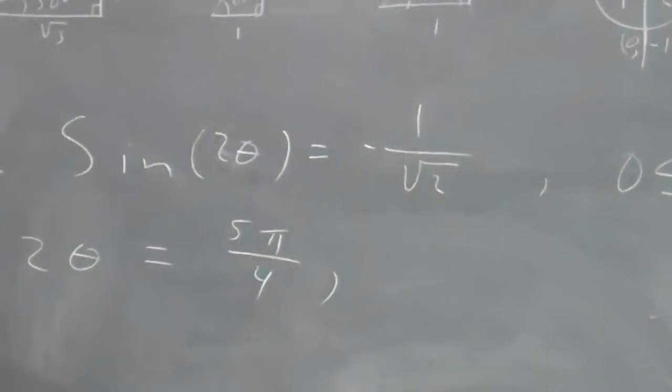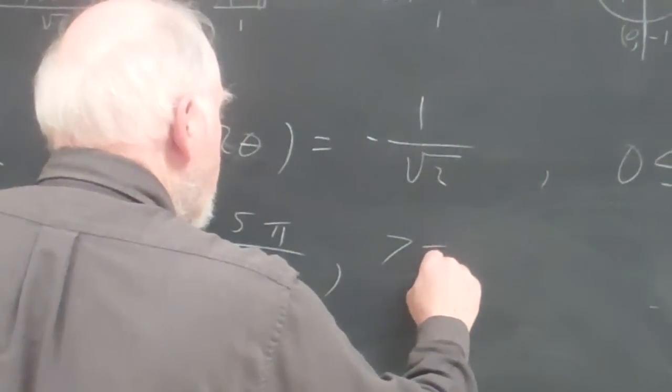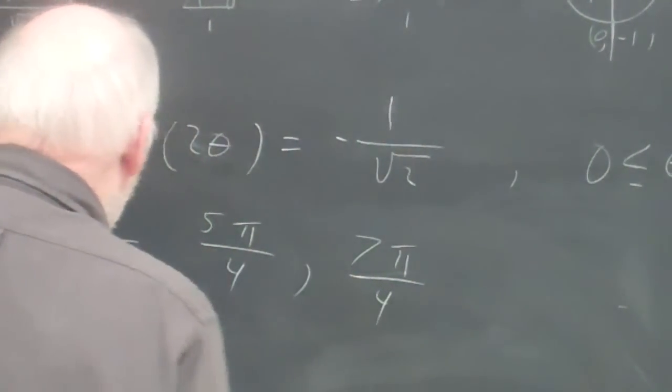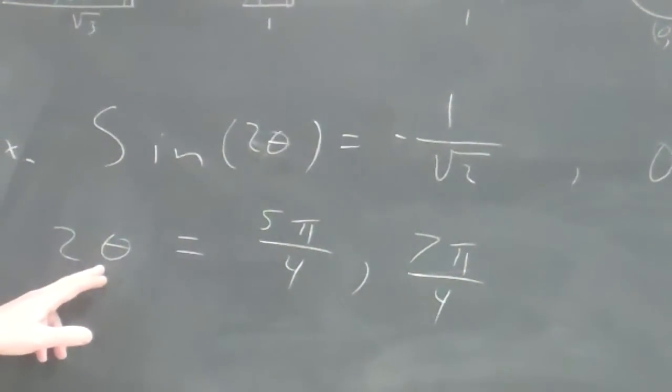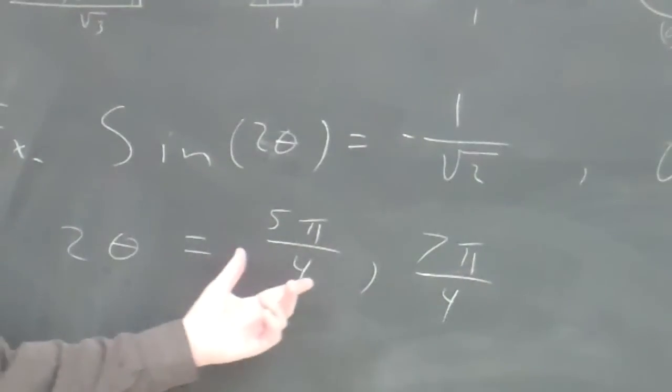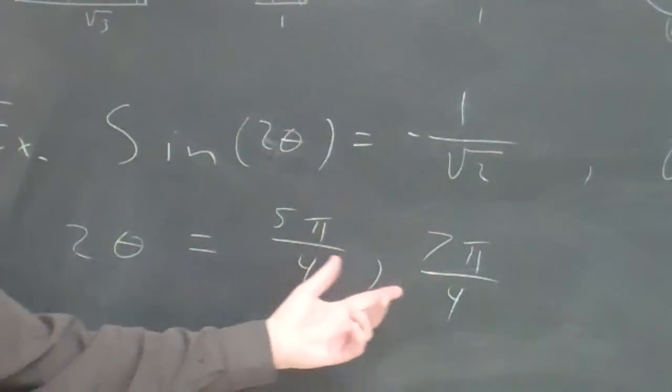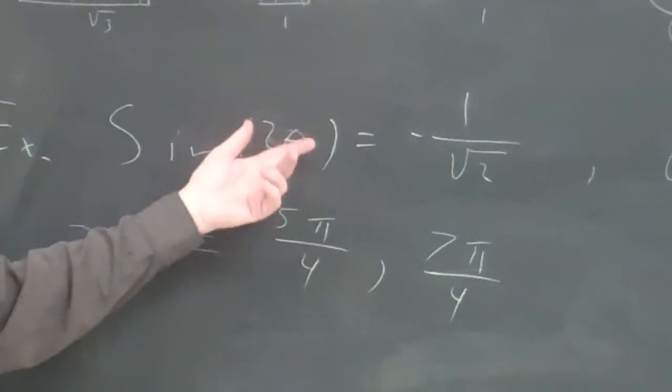And the other one is 7 pi over 4 if we were just solving this thing. Now, I'm not really solving for 2 theta. I really want to solve for theta. And I realized that I could find more angles, which would be solutions to this, that I could plug into here.